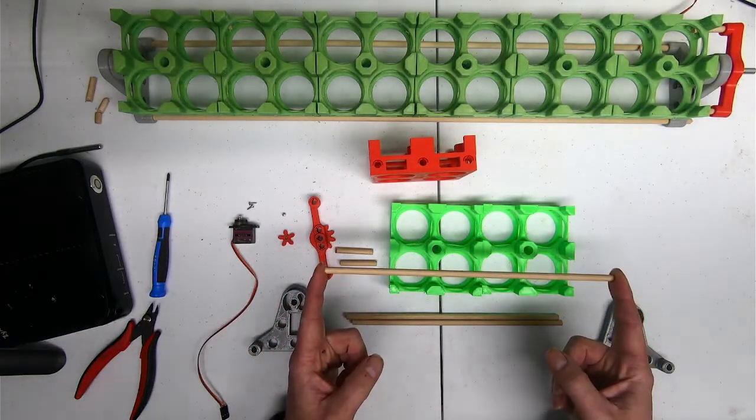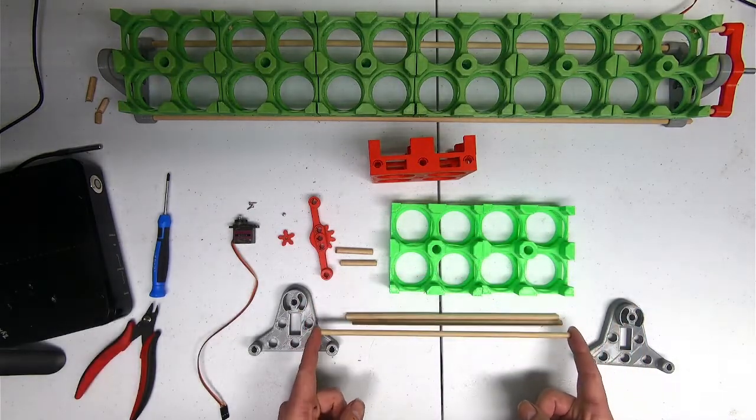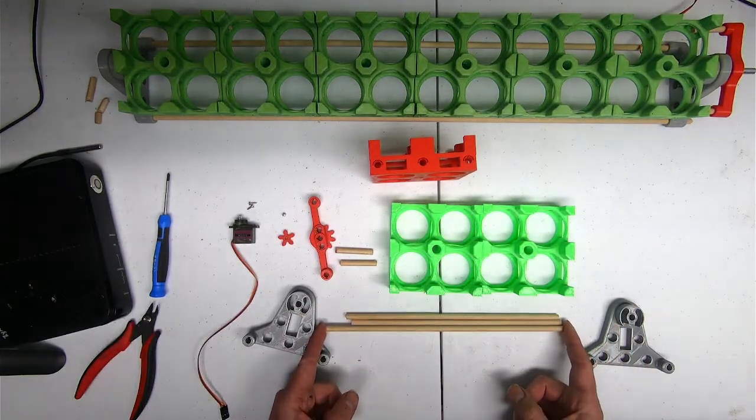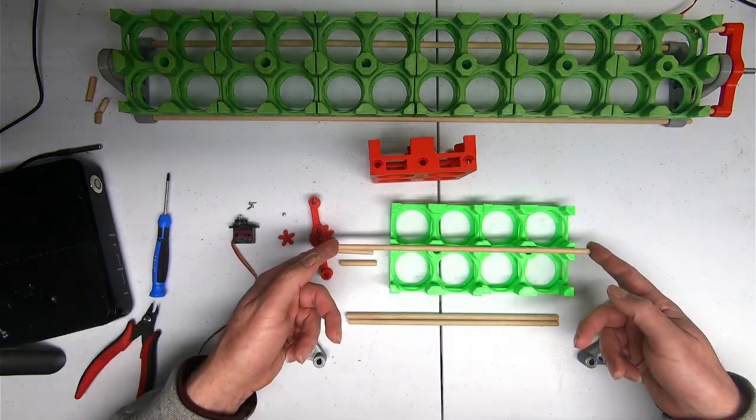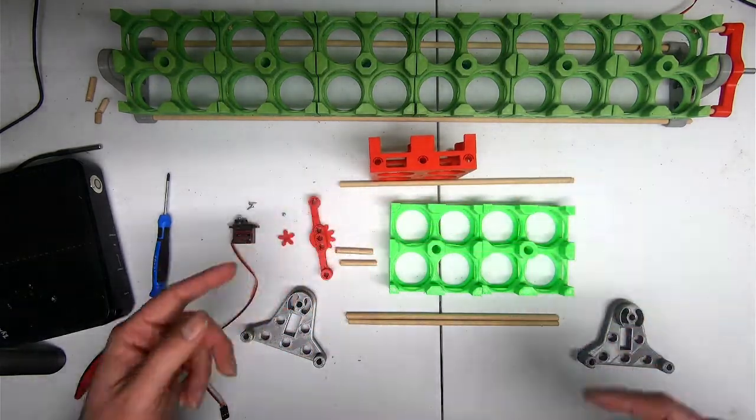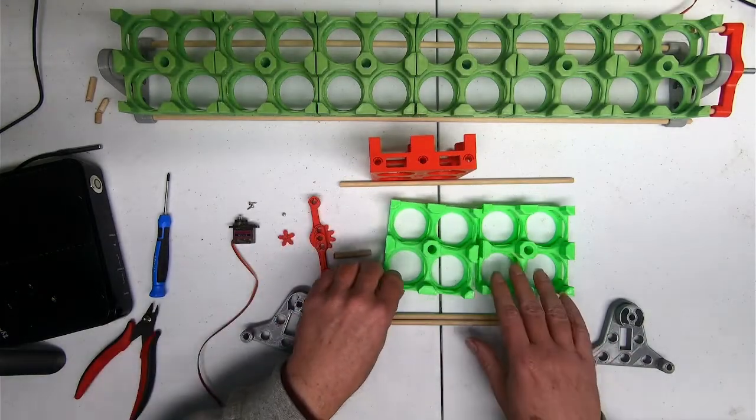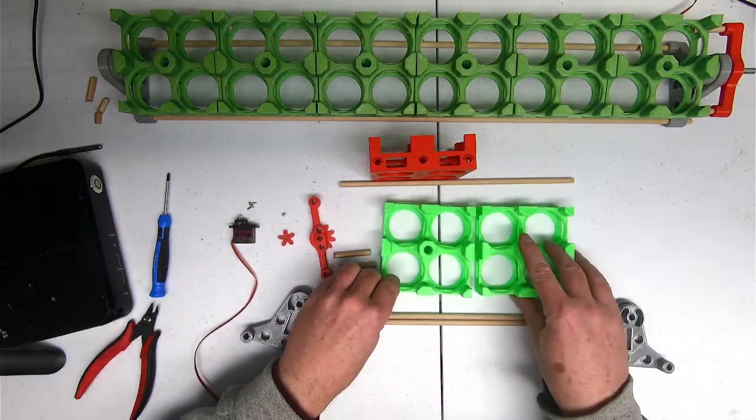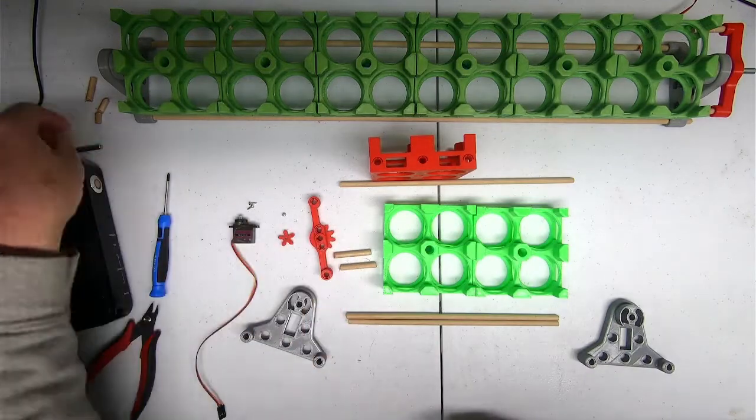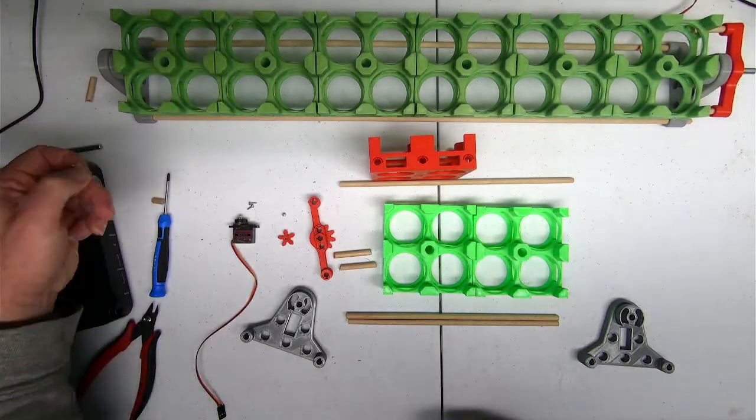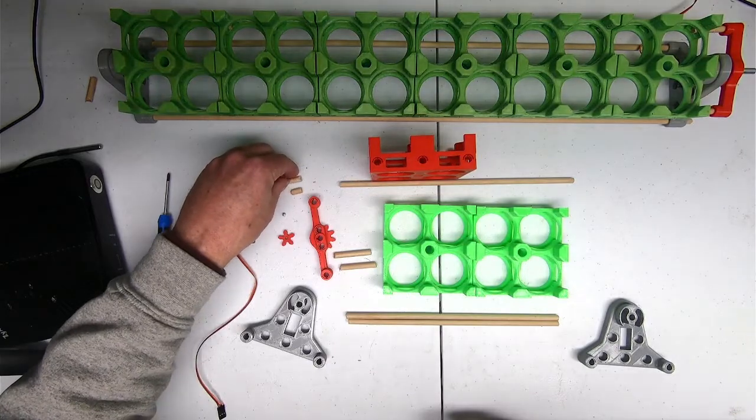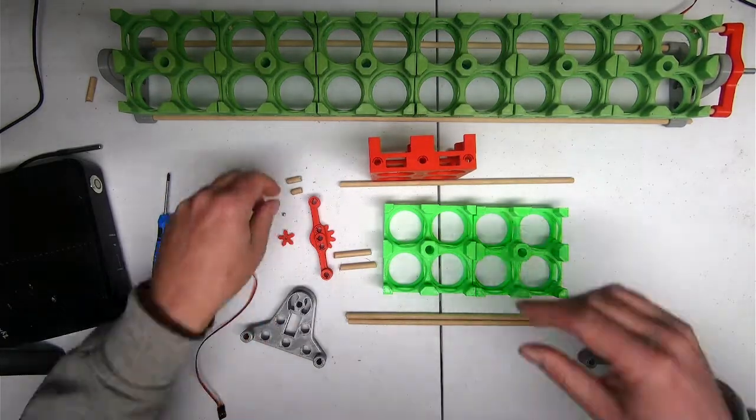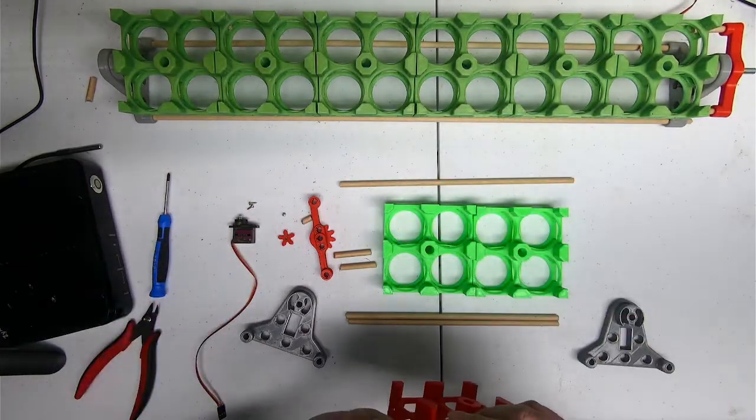And then this is the central rod. You want it to be about 20 centimeters longer than your other two rods. That's the actual central axle that everything pivots on. Then you're going to want for every one of these joints you have between cradles, you're going to want two 15 millimeter quarter inch dowels.